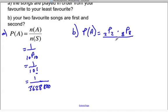Over the total number of ways that the songs can be played, which will be just like in part A, it's going to be the permutation of 10 choose 10. And the permutation of 2 choose 2 is 2 factorial times 8 factorial all over 10 factorial.